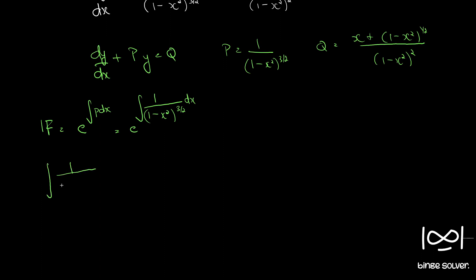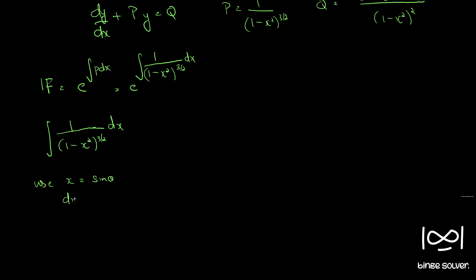Computing ∫1/(1-x²)^(3/2) dx. For such integrals we use the substitution x = sin θ, so dx = cos θ dθ. This becomes ∫1/(1 - sin²θ)^(3/2) · cos θ dθ = ∫1/(cos²θ)^(3/2) · cos θ dθ.